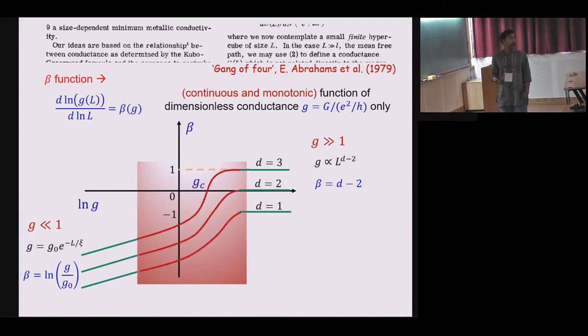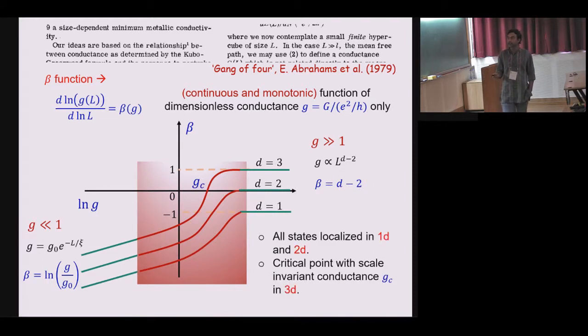Assuming this continuous and monotonic behavior, you just connect them and that will tell you whether you have a transition or not in some dimension. Any dimension less than 3 you will have all states localized. However in 3 dimension this beta function will cross through 0, it has to change sign and that will lead to a critical state with scale invariant conductances.